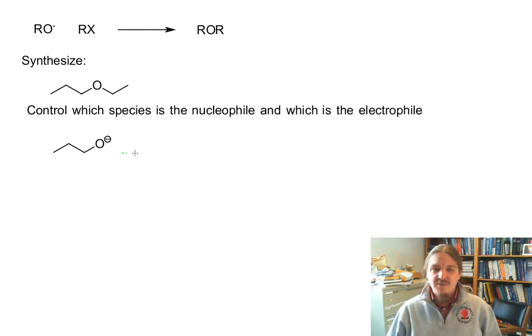So we can have the propoxide anion, and we can have it react with an ethyl group with an appropriate leaving group, and that would generate ethylpropyl ether. The mechanism of this reaction is a really straightforward, simple SN2 type reaction, like you've seen a number of places.